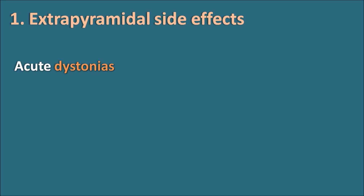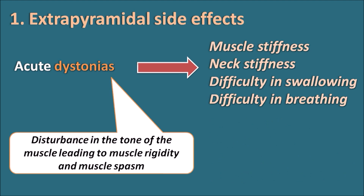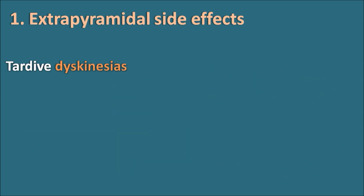The first extrapyramidal side effect is acute dystonias. 'Acute' means they are shortly developed after initiation of treatment, and 'dystonia' indicates disturbance in the tone of the muscle, resulting in muscle rigidity and muscle spasm. Acute dystonia results in muscle stiffness, neck stiffness, difficulty in swallowing, and difficulty in breathing. These symptoms are reversible in nature and can be resolved by stopping the drug.